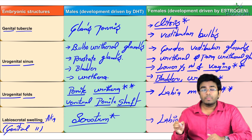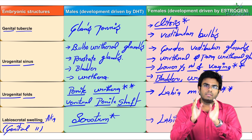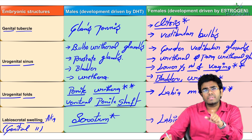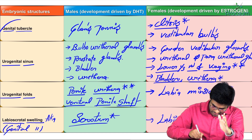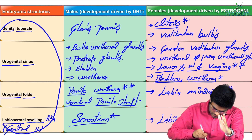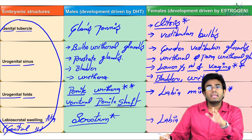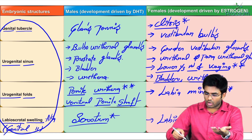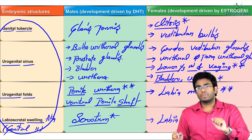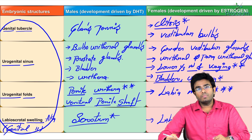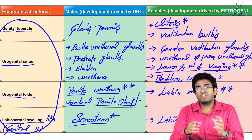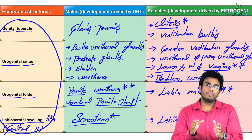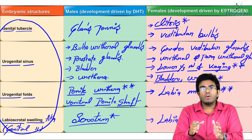The single important point to keep in mind is that development of external genitalia depends on the presence or absence of dihydrotestosterone. In its presence, embryological structures develop into male external genitalia; in its absence, by default they change into female external genitalia — vulva — which consists of clitoris, labia majora, labia minora, and vestibule. In the next module, we'll discuss the descent of gonads.